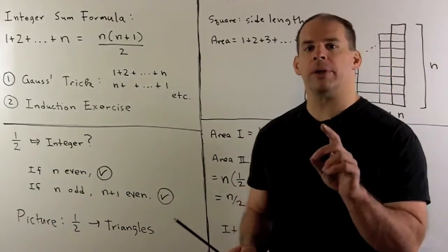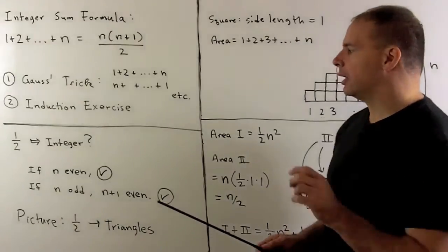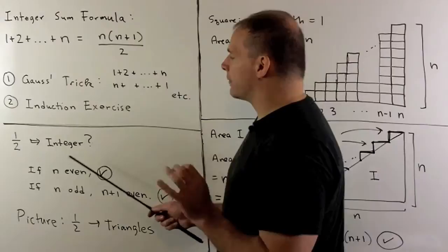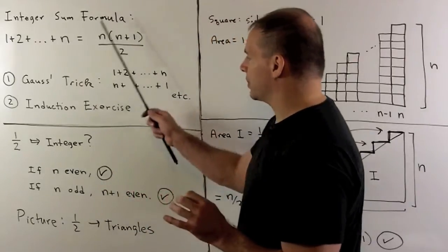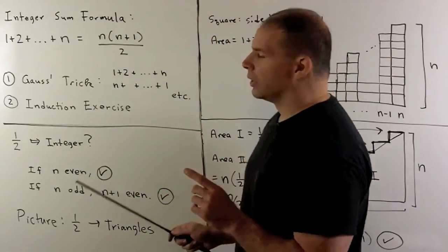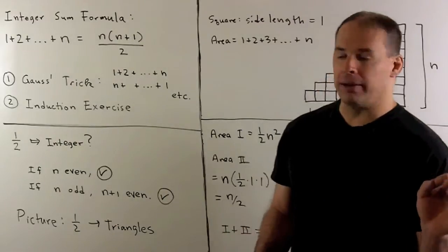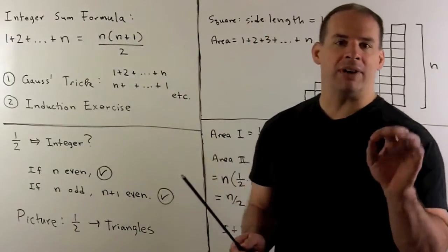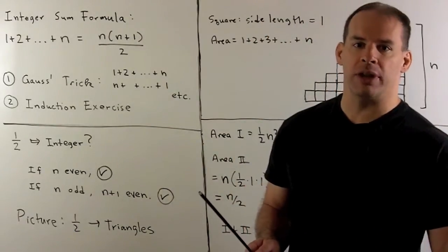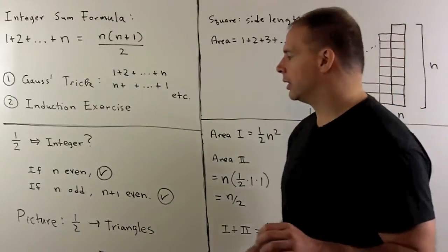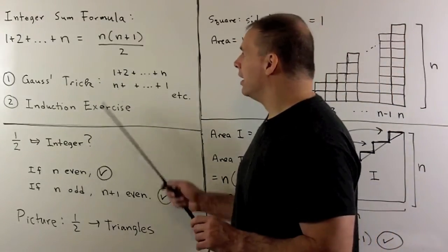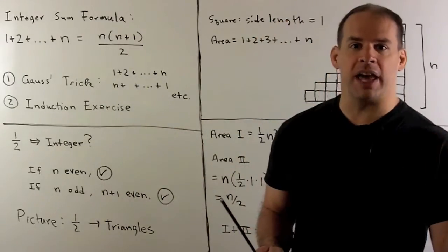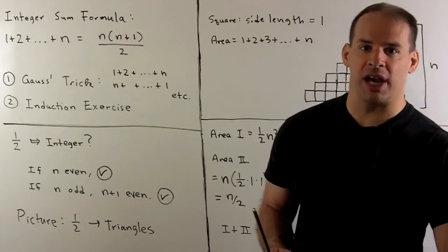We could also show it using induction. Here I want to focus on the 1 half, and explain why we always get an integer out of this. There are two possibilities for n. If n is an even number, then 2 divides into it, giving us an integer times n plus 1, which is another integer — that checks out. If n is odd, then n plus 1 is even, so 2 divides into it, and we have an integer times n, which is another integer — that checks out also.